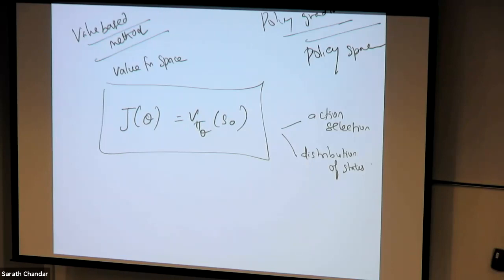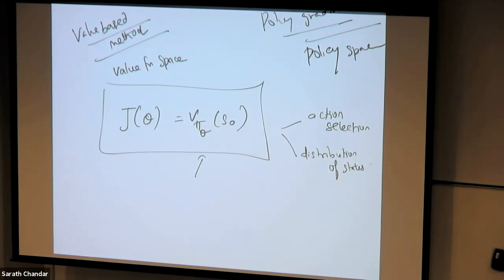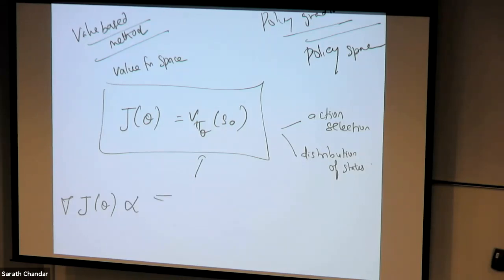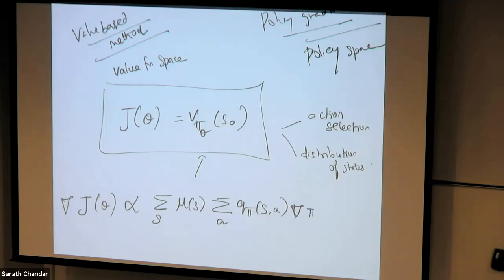This is where the policy gradient theorem helps us. The policy gradient theorem gives us something which is computable, and also proves that this computable quantity is directly proportional to the true gradient. When you're doing gradient ascent or descent, what is really important is the direction, not the magnitude — because whatever the magnitude is, you can scale it with alpha. So the gradient of J(θ) is actually proportional to: summation over all s of μ(s), summation over a of Q^π(s,a) times the gradient of π(a|s,θ).